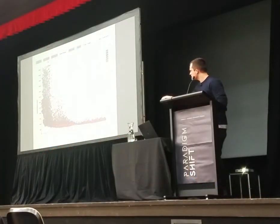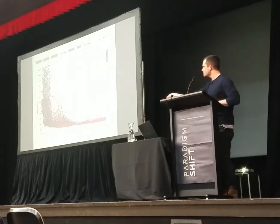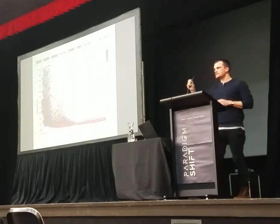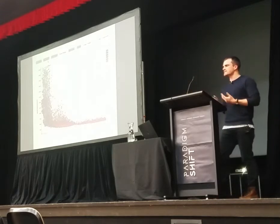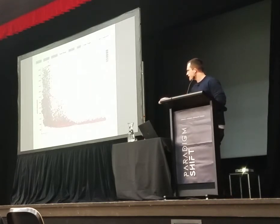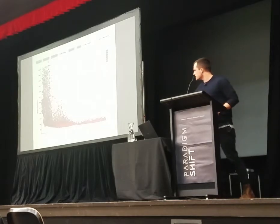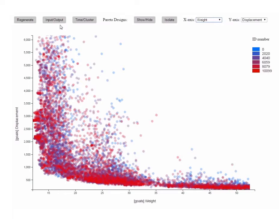They're mapped based on the two objectives: displacement on the y-axis and weight on the x-axis. What you can see start to form is a kind of boundary. What we really want, if it were possible, is a design that weighs zero kilograms and is infinitely stiff — the utopia point. The algorithm is trying to develop designs and push that boundary further and further toward this conceptual point. Designs are colored by generation — red ones are later — and you can see it trying to push toward better and better solutions.